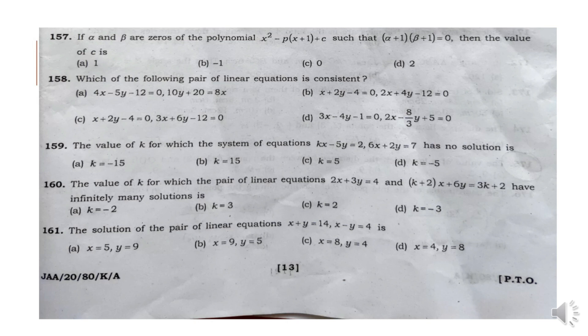Question 157: If alpha and beta are zeros of the polynomial such that (alpha plus 1) whole into (beta plus 1) is equal to 0, then the value of C is B minus 1.